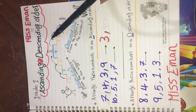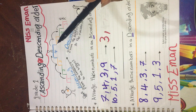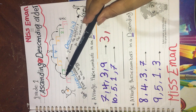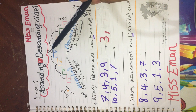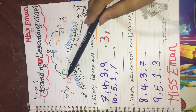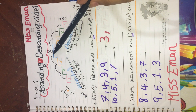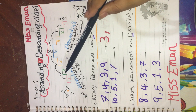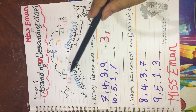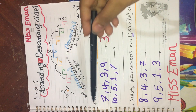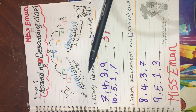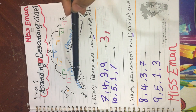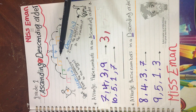We are going to start from step number one, two, three, four. And he is arriving! Do you know what it is? It's ascending. Ascending means going up from the smallest number to the biggest number.